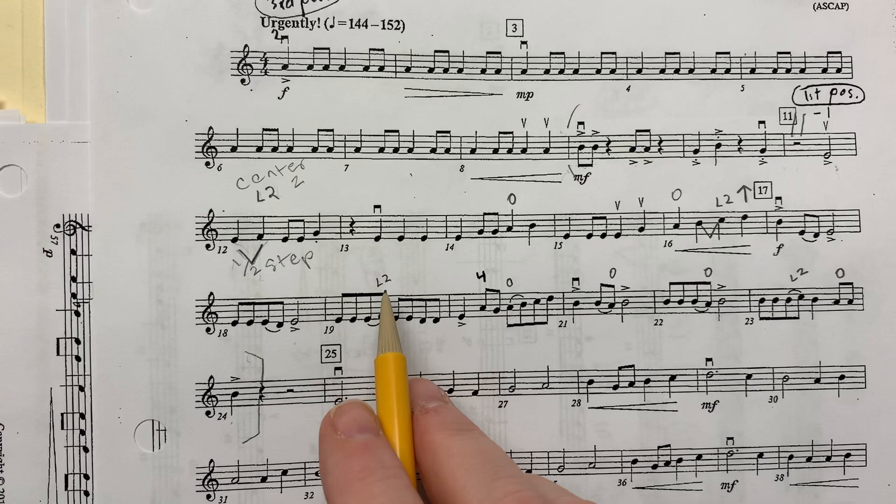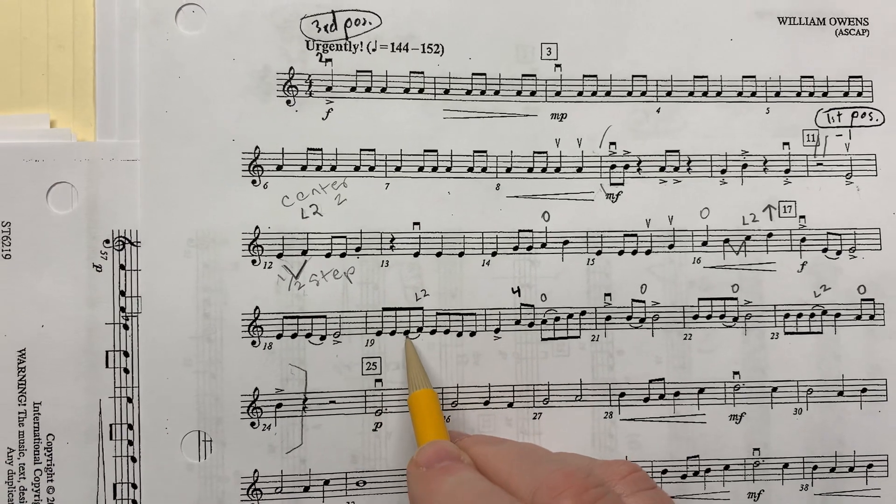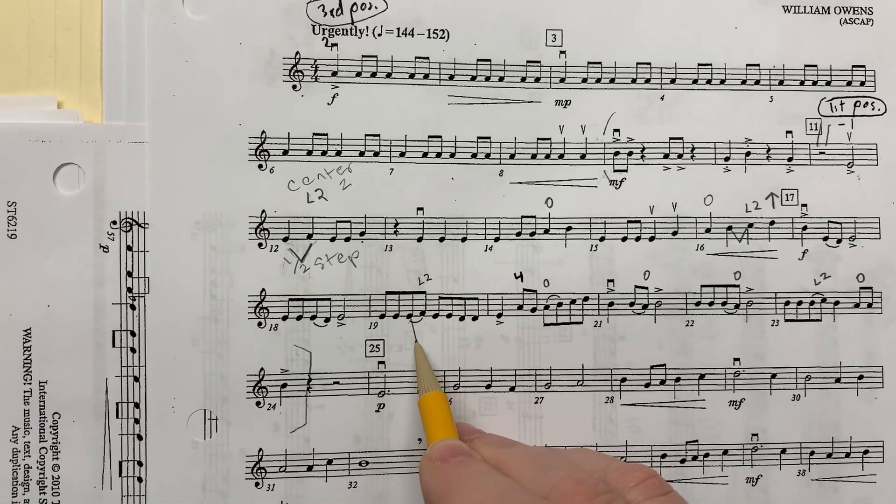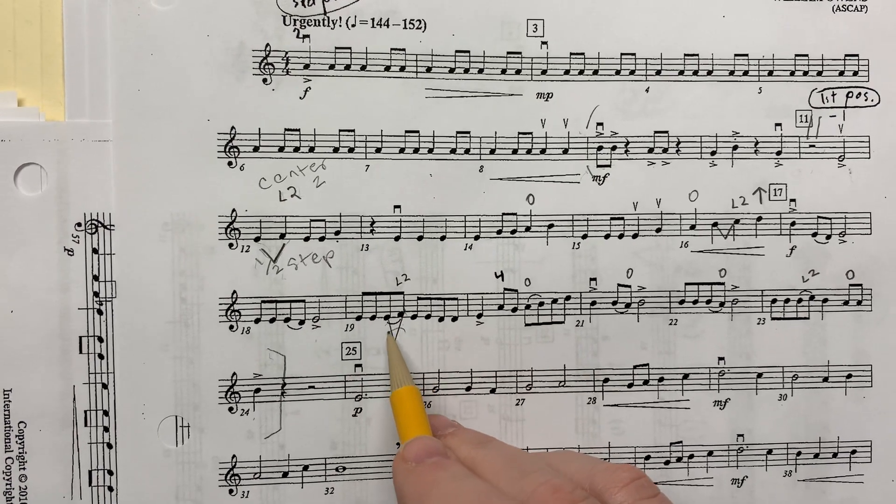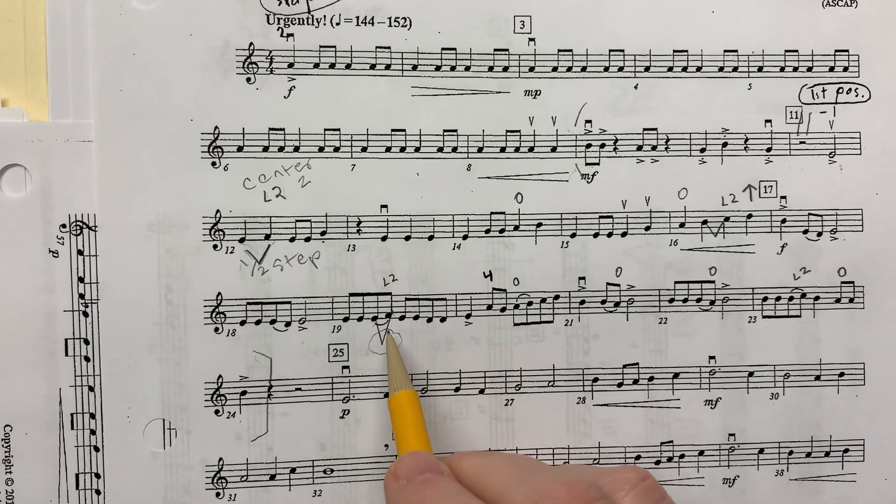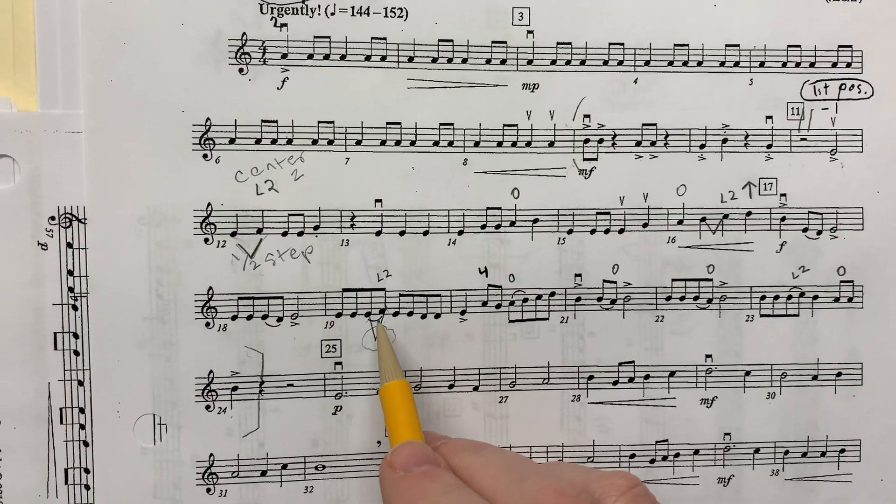We have another low two on the F natural. Draw the half-step marking. Most important thing about the half-step is that it comes to a point. All right. That's a half-step marking. It looks very different from a slur.